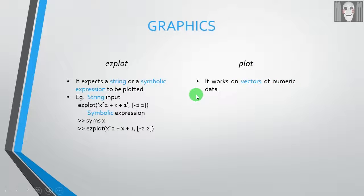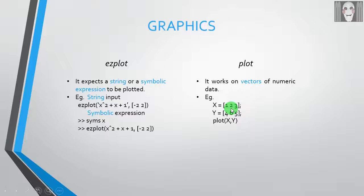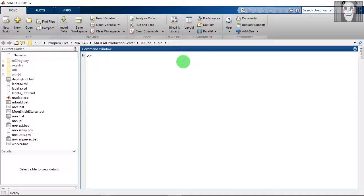The plot command works on vectors of numeric data. First you provide a vector x with the x-coordinates of the points you intend to plot, then a vector y with the y-coordinates. Finally, use the plot keyword followed by parenthesis containing the x and y vectors.